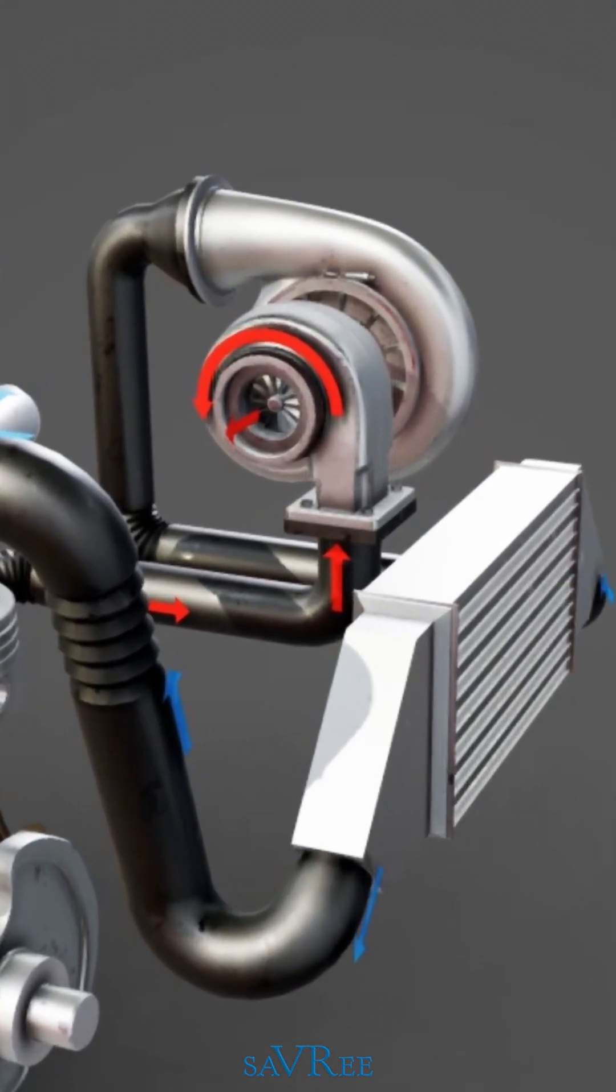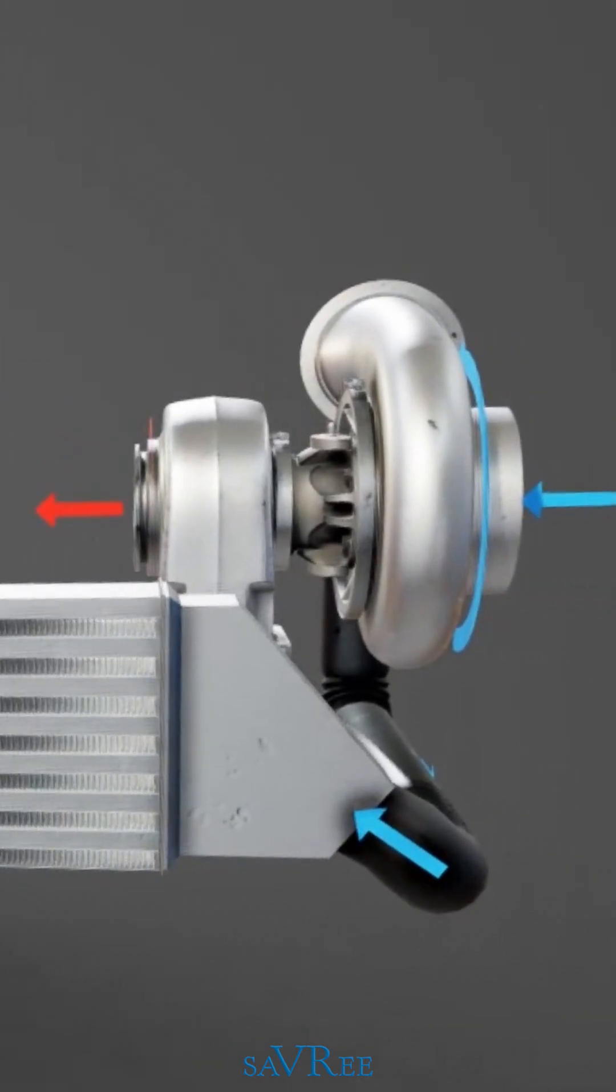Exhaust gases flow through the turbine, causing it to rotate at high speed. The turbine is connected to the compressor via a common shaft, which means that as one rotates, so too does the other.